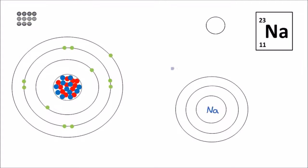Each electron shell has a maximum number of electrons it can hold. The first shell can hold a maximum of two electrons. The second shell can hold a maximum of eight and the third shell can hold a maximum of eight as well. When we draw electrons, we start in the center and work our way outwards, filling up the shells.